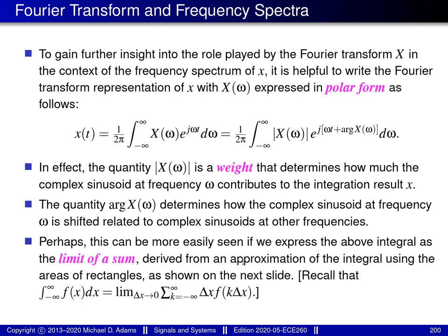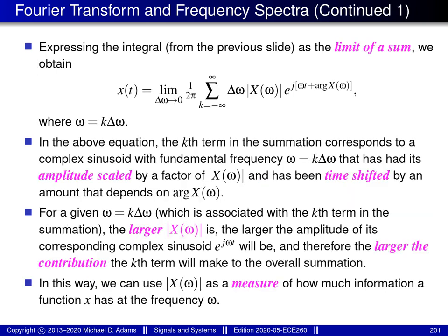In particular, we can use the fact that the integral of a function is defined by this particular equation — in other words, integration is simply defined as the limit of a sum. So what we can do is use this formula to rewrite the integral on the right-hand side as the limit of a sum. Expressing the integral from the previous slide as the limit of a sum, we obtain this particular equation, where omega is equal to k times delta omega.